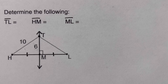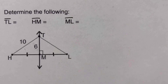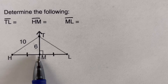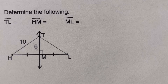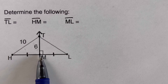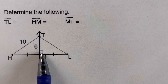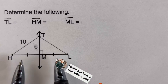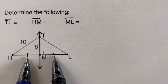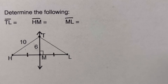Pause the video and try this problem on your own. The problem asks us to determine TL and HM. We examine whether line TM is a perpendicular bisector of HL. The small square confirms perpendicularity, and the tick marks confirm that HM and ML are equal, so HL is bisected. Therefore, line TM is a perpendicular bisector of HL.